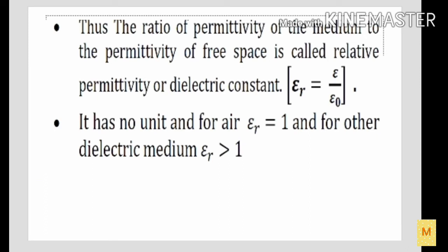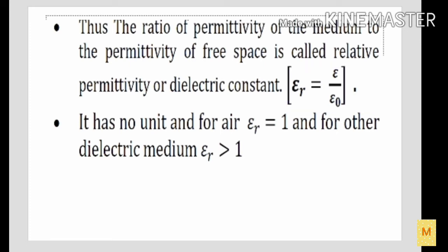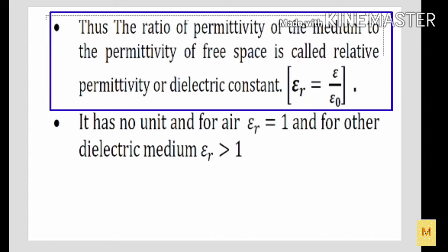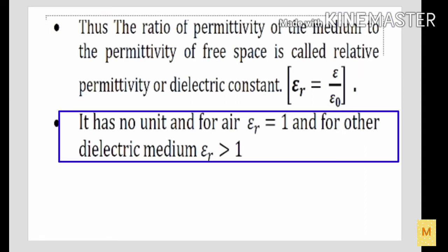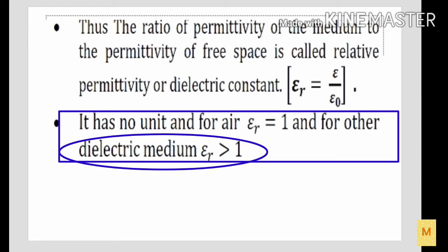Next one is the definition for relative permittivity or dielectric constant. Look at the equation: εᵣ = ε / ε₀, where εᵣ is the relative permittivity, ε is the permittivity of any medium, and ε₀ is the permittivity of free space. From this equation, the relative permittivity or dielectric constant is defined as the ratio of the permittivity of the medium to the permittivity of free space. The dielectric constant does not have any unit. If the charge is placed in air medium, the relative permittivity εᵣ = 1. If the charge is placed in any other dielectric medium, then εᵣ is greater than 1.